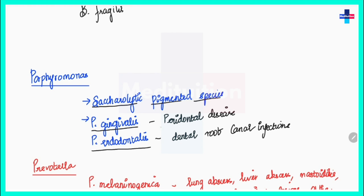Porphyromonas gingivalis is responsible for periodontal diseases, and Porphyromonas endodontalis is responsible for dental root canal infections.